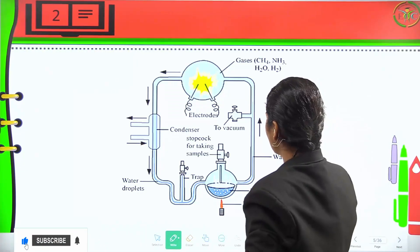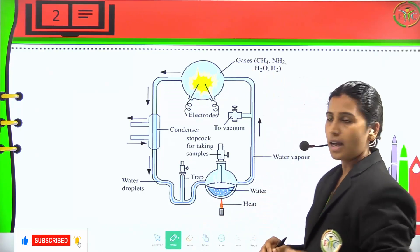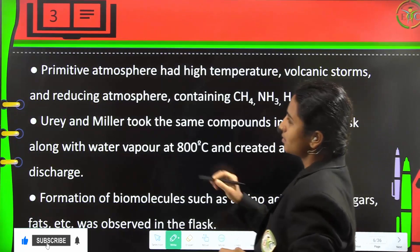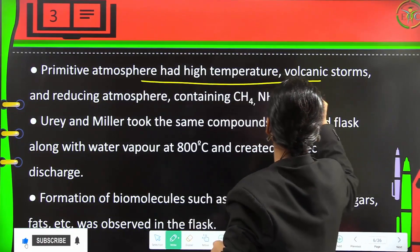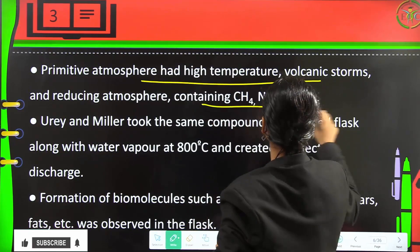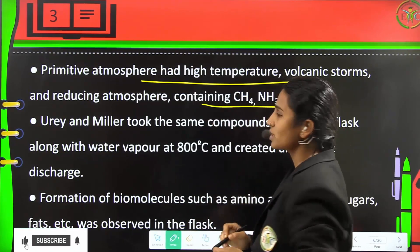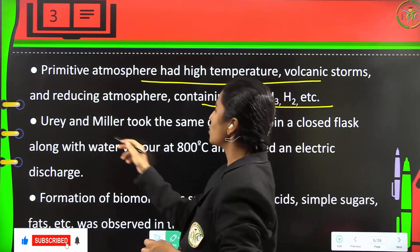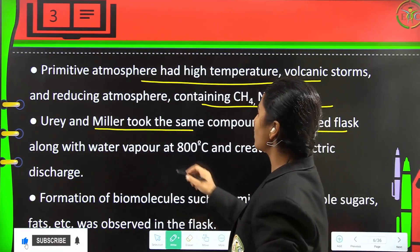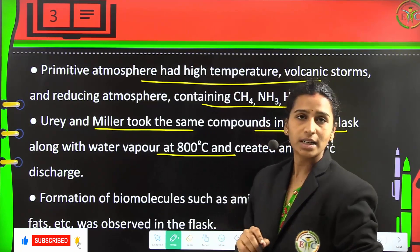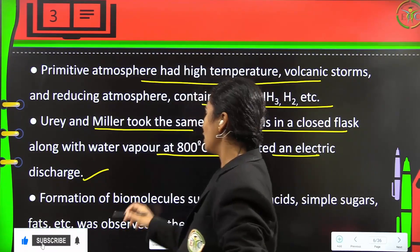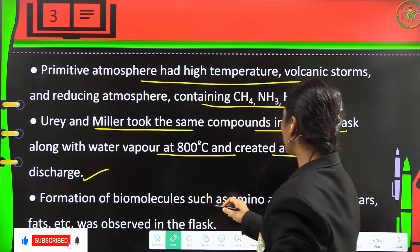Stanley Miller and his colleagues experimentally showed that the primitive atmosphere had high temperatures, volcanic storms, and a reducing atmosphere containing CH4, NH3, and H2. Urey and Miller took the same compounds in a closed flask along with water vapor at 800 degrees centigrade, then created an electric discharge.